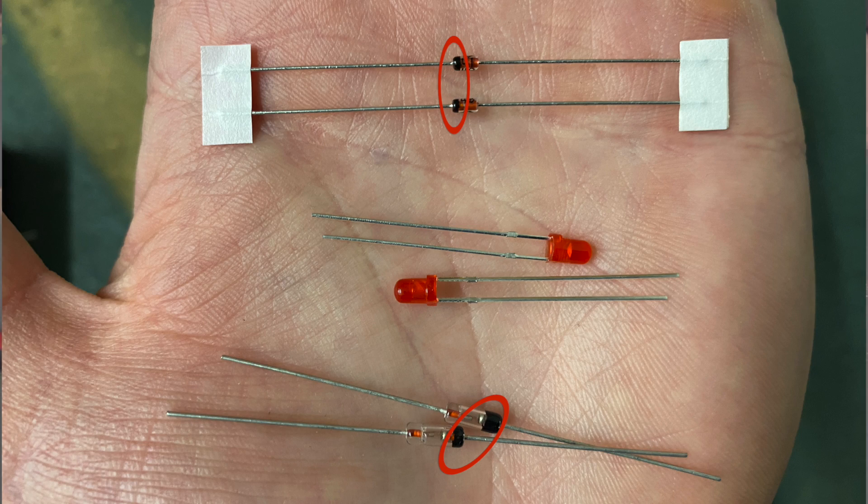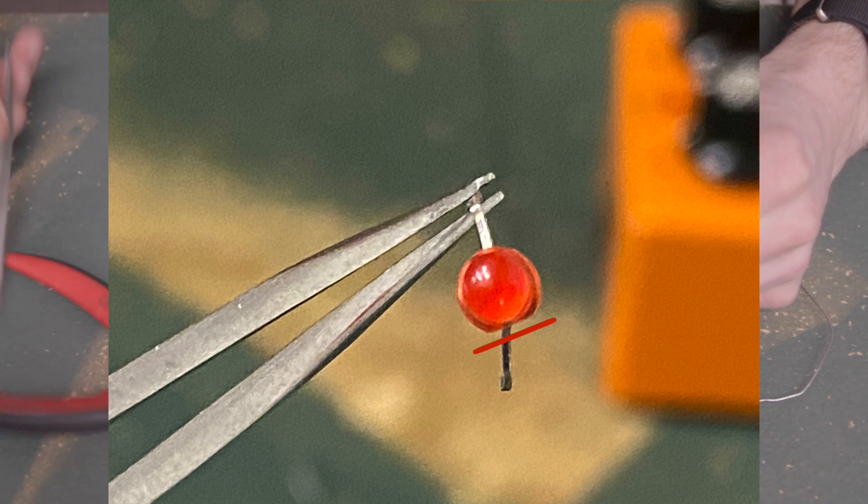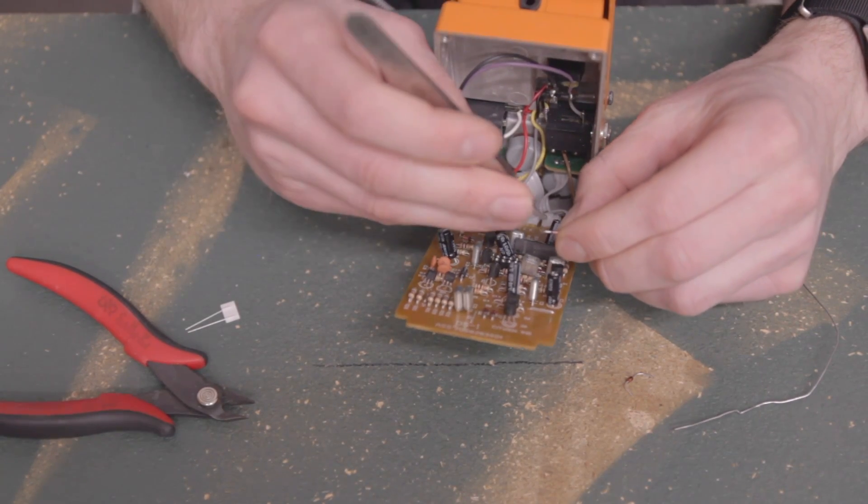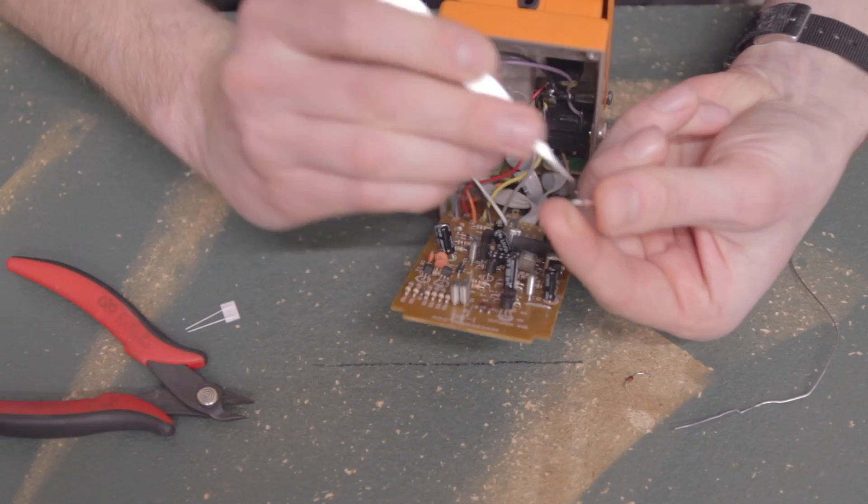Most diodes will have a line on one side to indicate the cathode. If using LEDs, the cathode side of the LED has a flattened spot on the rim of the LED. Cut the legs shorter, and shape the legs so the spacing matches the outer holes of the sockets.